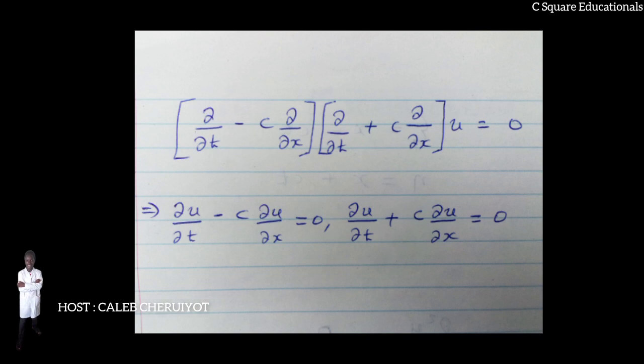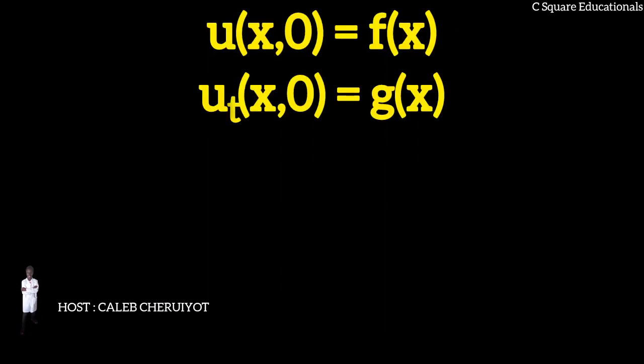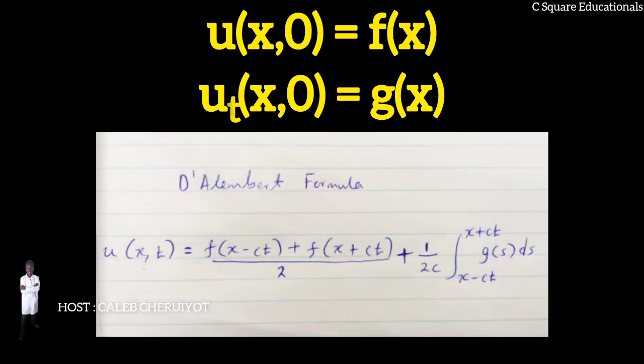For an initial value problem, the arbitrary functions F and G can be determined to satisfy initial conditions u(x,0) = F(x), u_t(x,0) = G(x). The result is D'Alembert's formula.